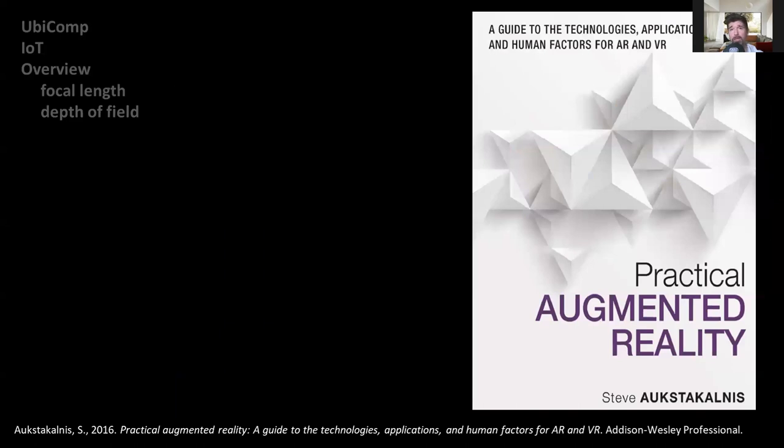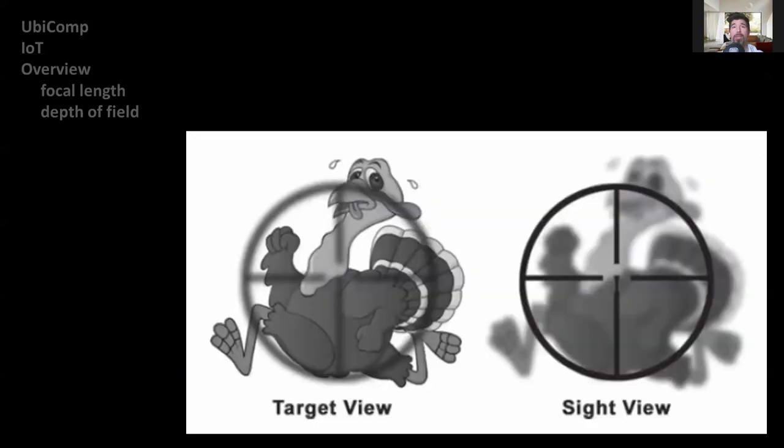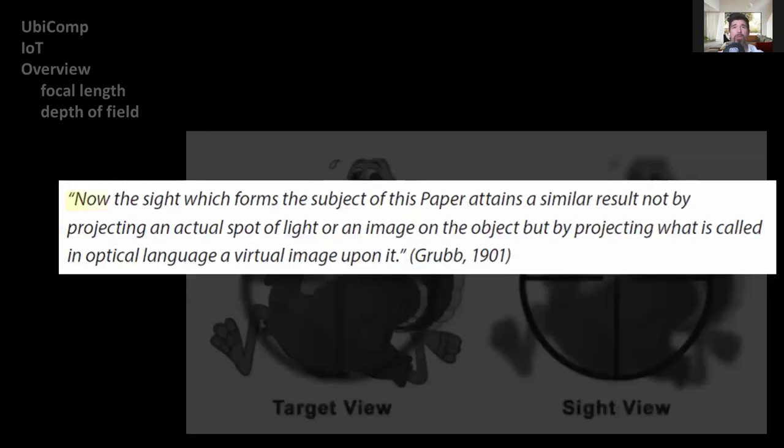In this book, The Practical Augmented Reality, this problem is addressed in an example dating back to 1901, where a patent was filled by Irish telescope maker Sir Howard Grubb, describing a device intended for use in helping aim projectile firing weapons. In the patent, he specifies, 'now the sight which forms the subject of this paper attains a similar result not by projecting an actual spot of light or an image on the object, but by projecting what is called in optical language, a virtual image upon it.'